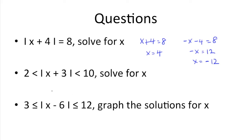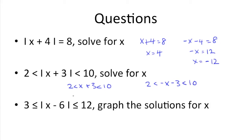Next we have 2 is less than the absolute value of x plus 3, which is less than 10. Solve for x. So first we just need to remove the absolute value symbols. Then we also need to run a negative through the absolute value terms, giving us negative x minus 3 is less than 10.